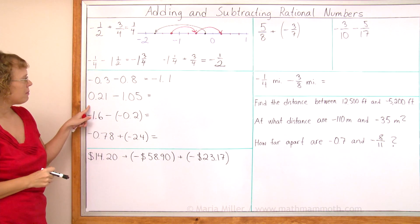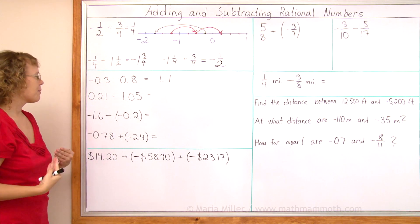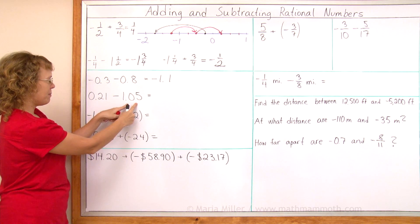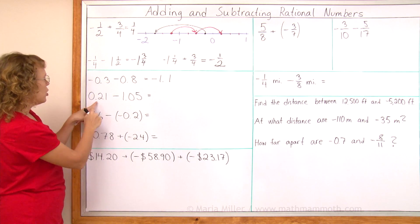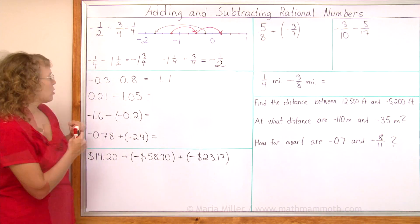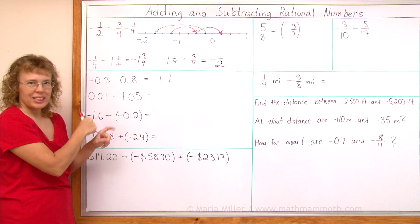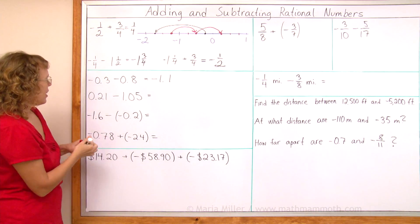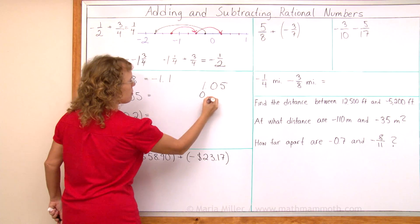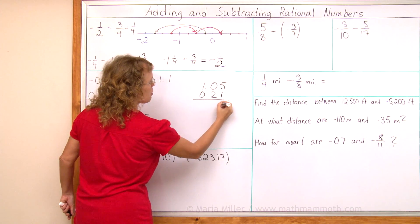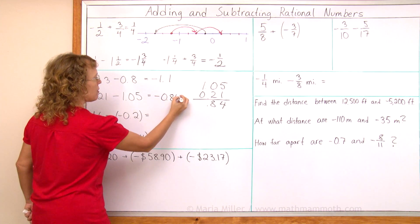Now this one is a little bit trickier. It is a plain subtraction problem, it looks like. But this number is smaller than that. So then our answer will be negative. It's like if I had two minus five. What we need to do, because this is a bigger number, we need to actually subtract these numbers, but take the answer as negative. And we get four here and eight there. So the answer is negative 0.84.